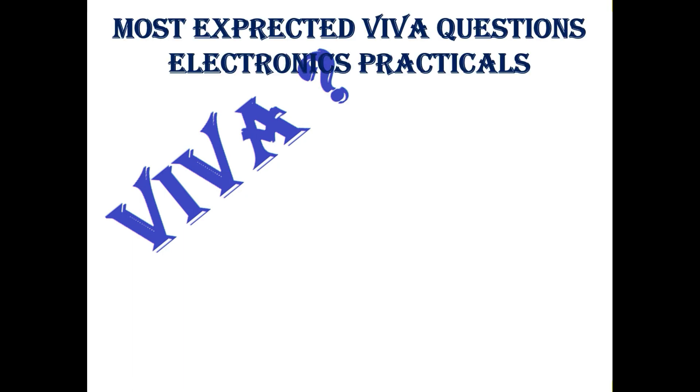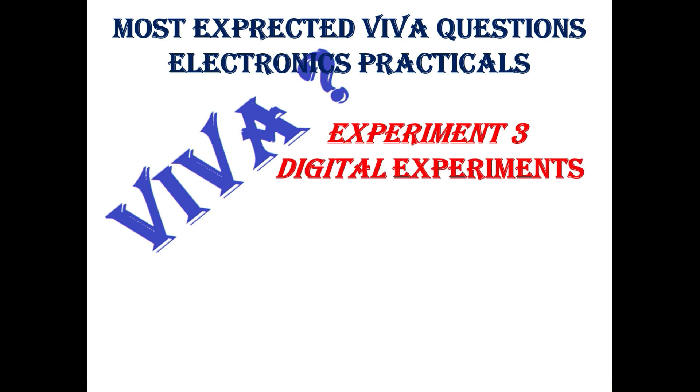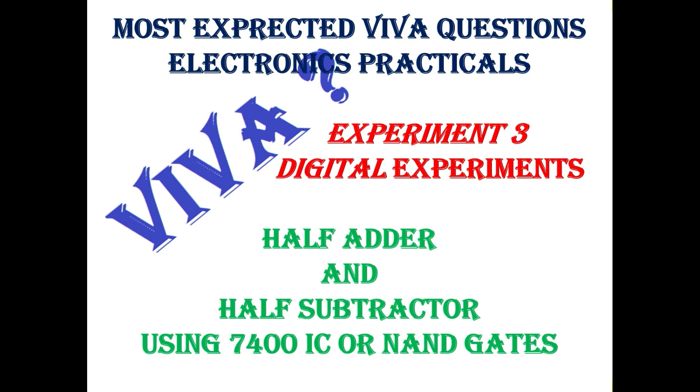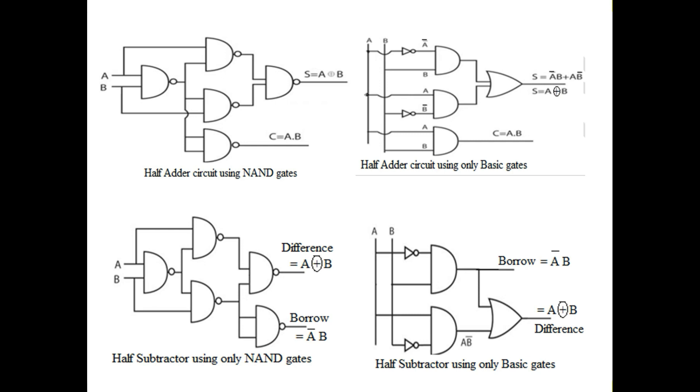Today we are going to see the most expected VAIWA questions for electronics practicals, that is experiment 3, digital experiments under digital electronics: half adder and half subtractor. These two we are constructing using the universal gate, that is NAND gate, and we are using the IC 7400. We will move on to the questions, but before we do, let me give you a basic idea about the circuits.